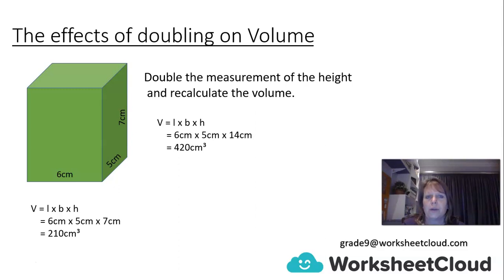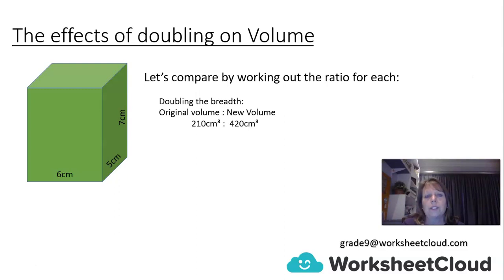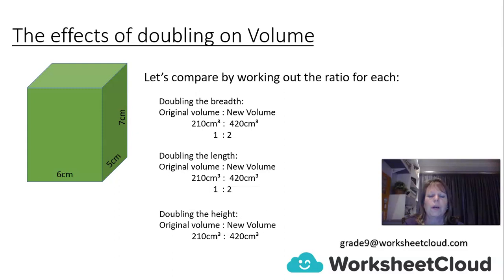Let's compare by working out the ratios. Doubling the breadth: original volume 210 cm cubed to new volume 420 cm cubed — that's a ratio of 1 to 2. Doubling the length gives the same result: 1 to 2. And doubling the height is exactly the same — 1 to 2. Every time you double one side, you double the volume. The ratio is 1 to 2.